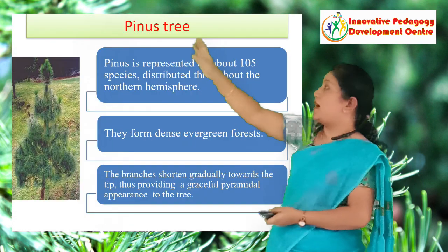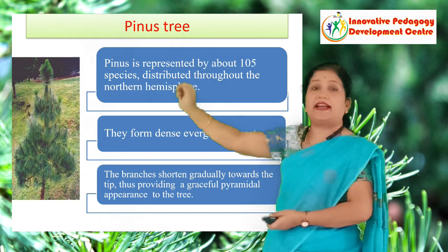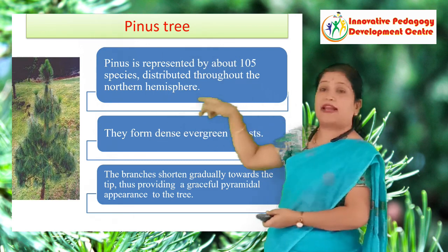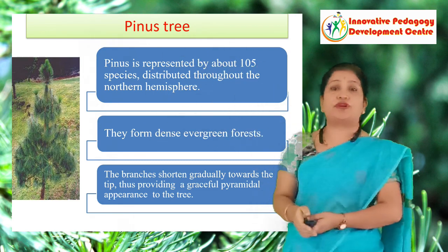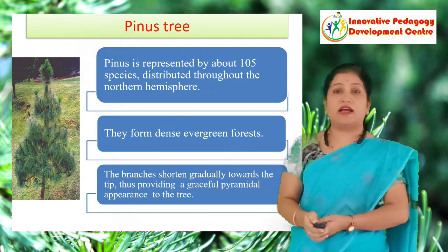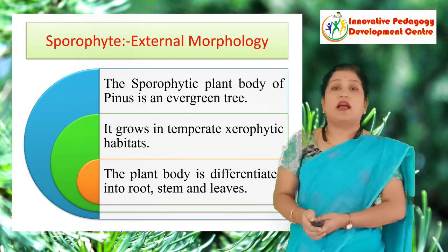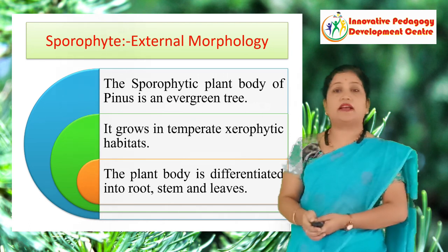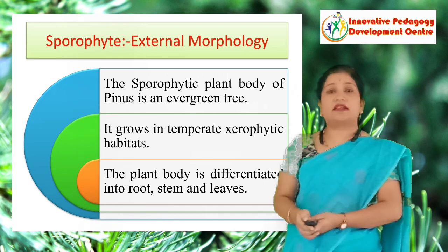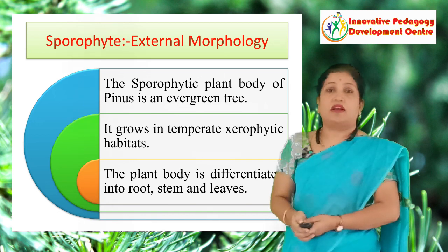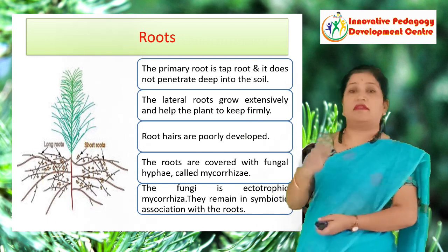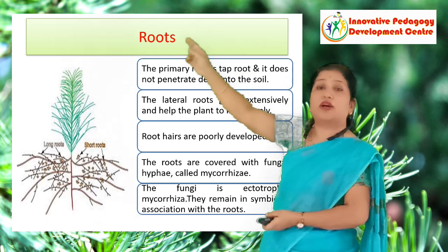These are tall trees, up to a height of 30 meters, and you can see the typical pyramidal or conical shape, which is due to the monopodial or radial branching. The plant body of Pinus is a sporophyte growing in the temperate xerophytic habitat. It is differentiated into root, stem, and leaves. Now we will focus on the morphology of this plant, starting with the roots.